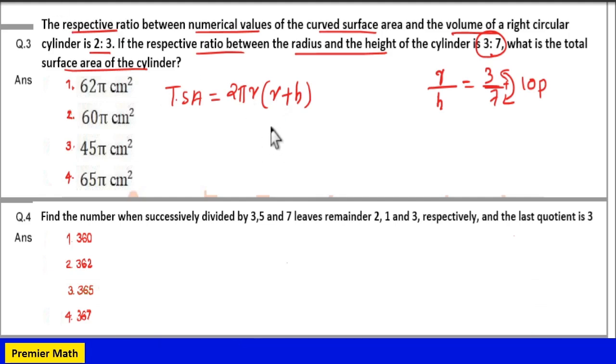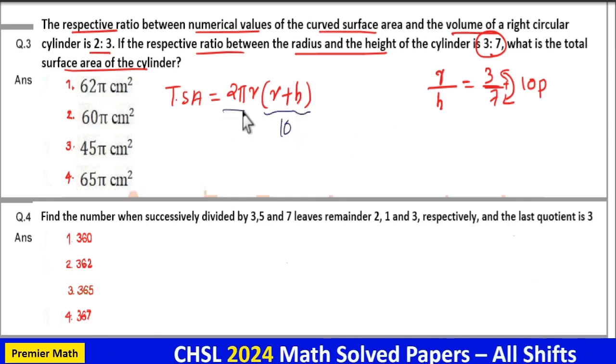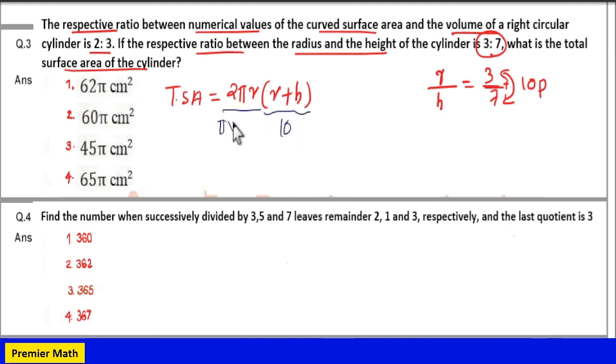Now, in the total surface area we have r + h as 10 parts, and here 2πr, that is π times 2r.